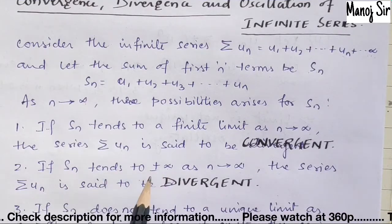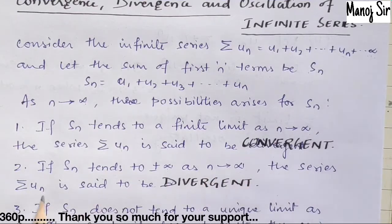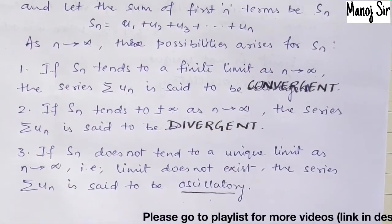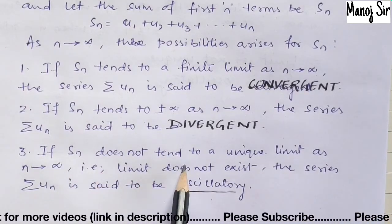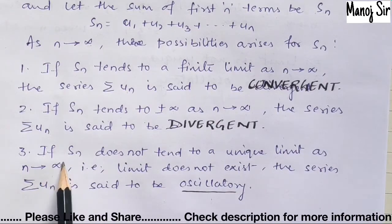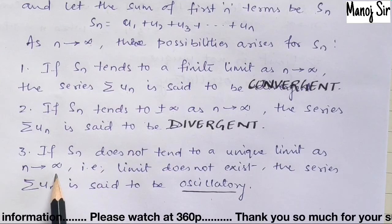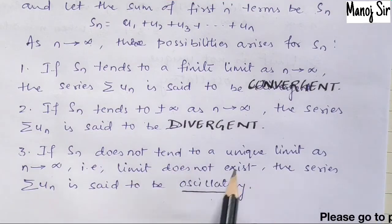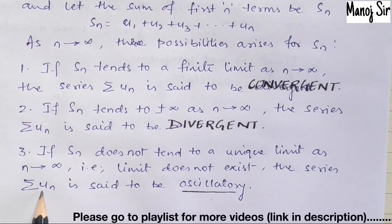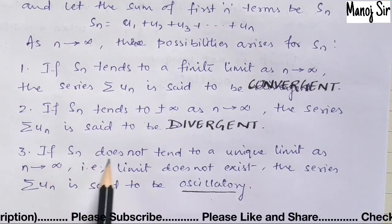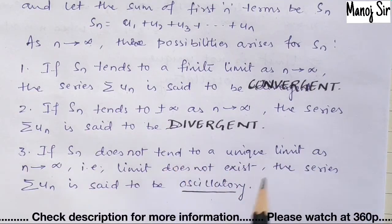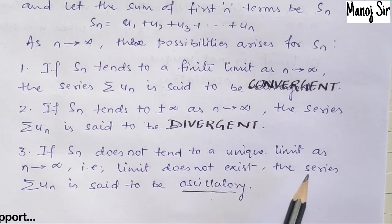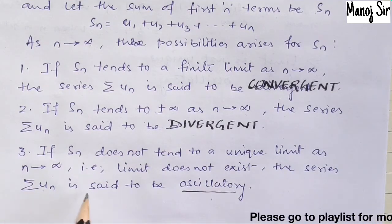Third, if Sₙ does not tend to a unique limit as n tends to infinity — that is, the limit does not exist — then the series Σuₙ is said to be oscillatory.